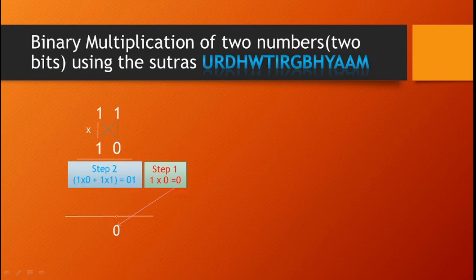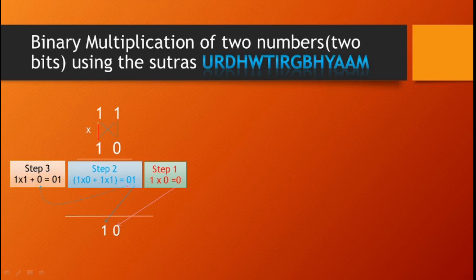So 1 goes into the result, and the carry 0 is forwarded to Step 3. Step 3 is the left-hand side digit multiplication: 1 into 1, plus the carry from Step 2. So 1 into 1 plus 0 equals 1. We place this in the final result, giving us 0110, which is the equivalent of 6.